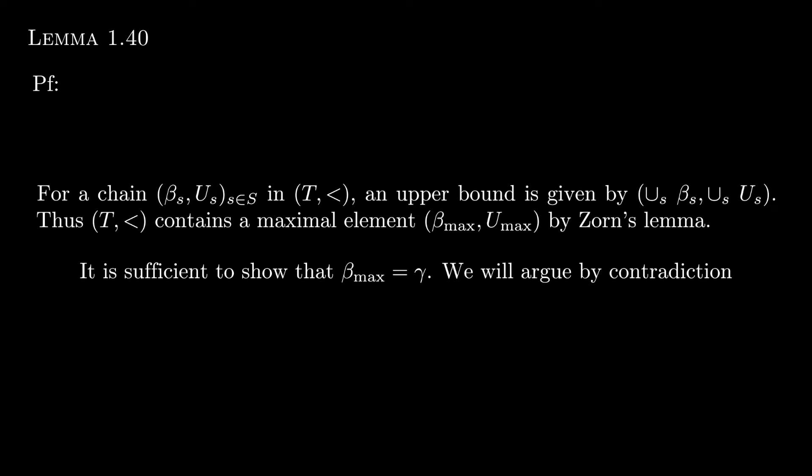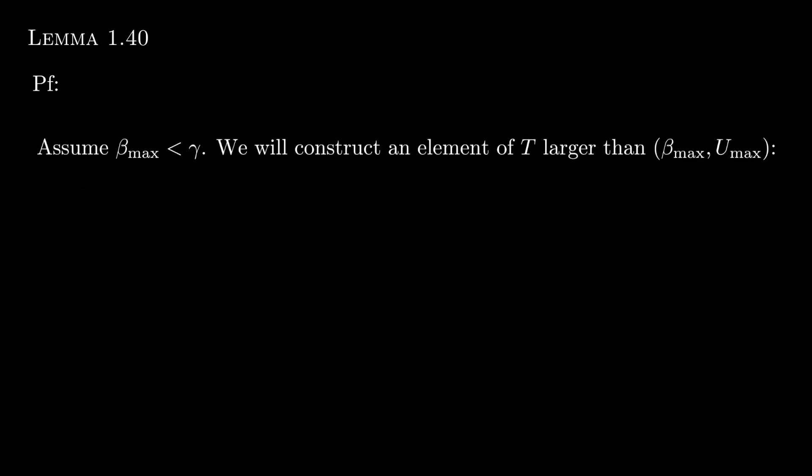And what we want to show is that that maximal element is precisely that open subset that happens at the stage gamma. Now the only other case would be that that maximal element presents itself before gamma. And that would be a problem because then our enlarged open subset around C wouldn't actually be an open subset of the entire cell complex. It would be an open subset of a sub-cell complex. So we're going to be arguing this by contradiction. So assume that this maximal element presents itself before the stage gamma. Our contradiction will arise because then we'll be able to construct an element of T larger than our assumed maximal element.